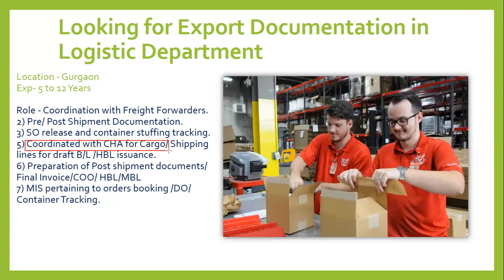Point number five is coordinating with the shipping line for MBL draft and HBL issues. We first have to book space in the ship through the shipping line's website, providing details such as the destination location. If you have a direct shipping line, you get the MBL. If you have an agent handling the booking, you will get the HBL through them.